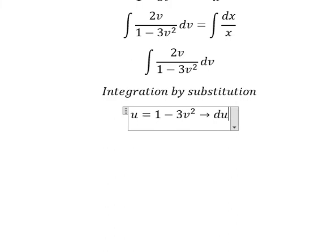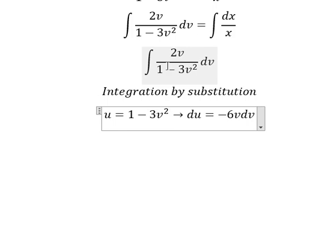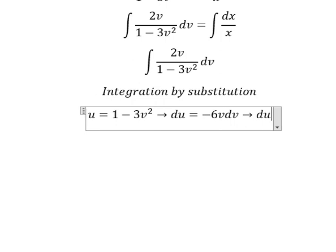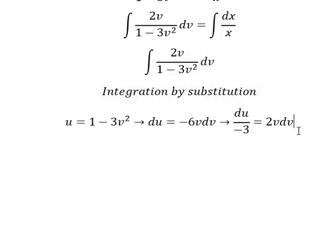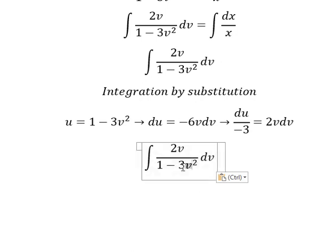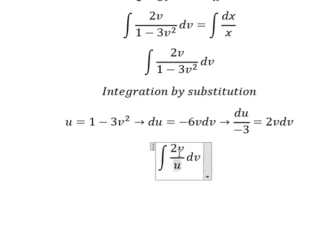Then du equals negative 6v dv, because the derivative of v squared is 2v. The coefficient 3 times 2v gives us 6v. So we divide both sides by negative 3. We change 2v dv by du over negative 3.